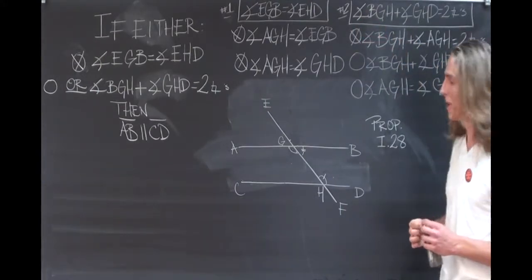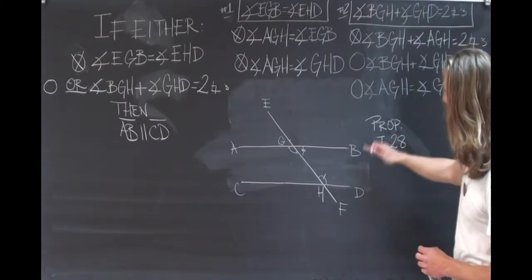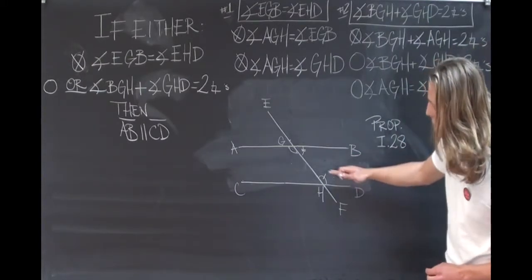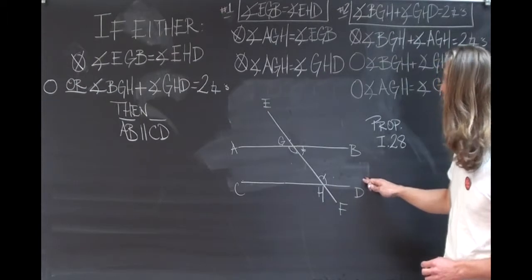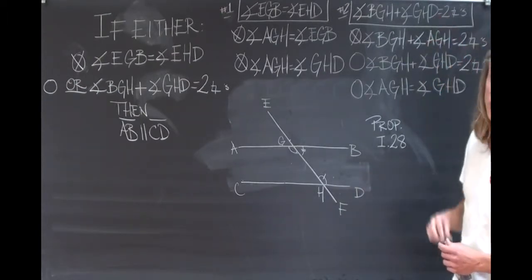Now, we also know that the angle BGH plus the angle GHD are equal to two right angles. That's part of our given.